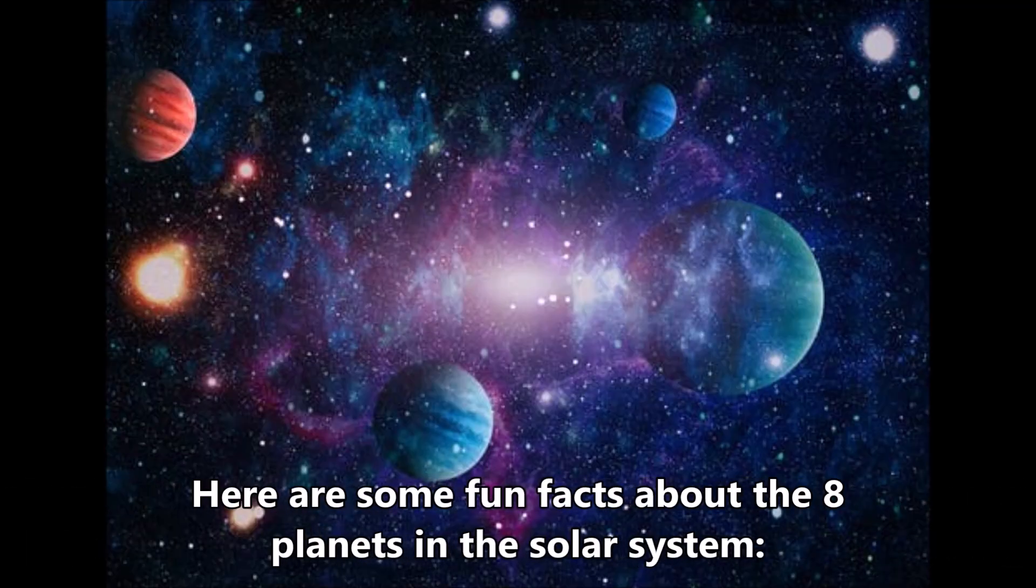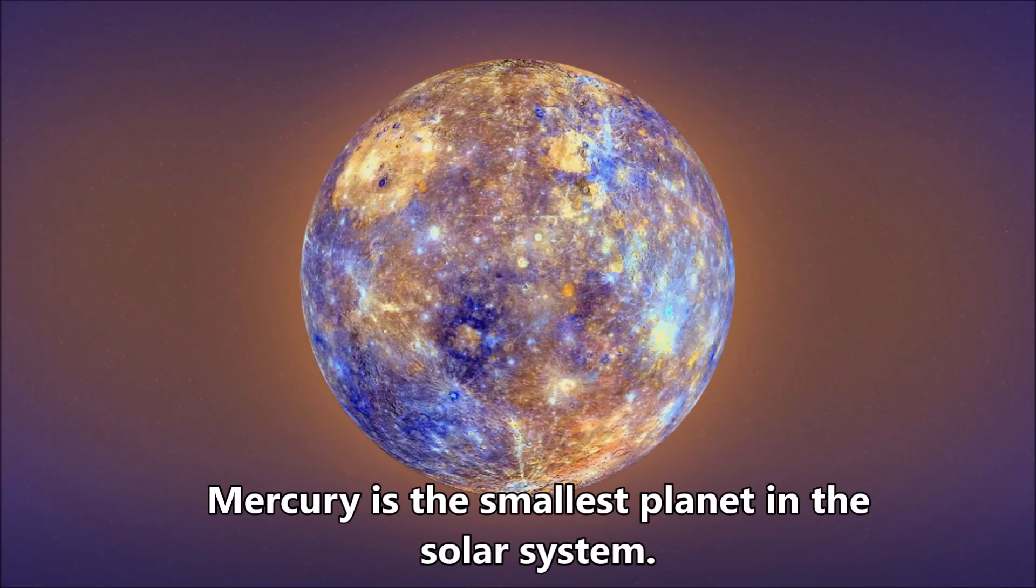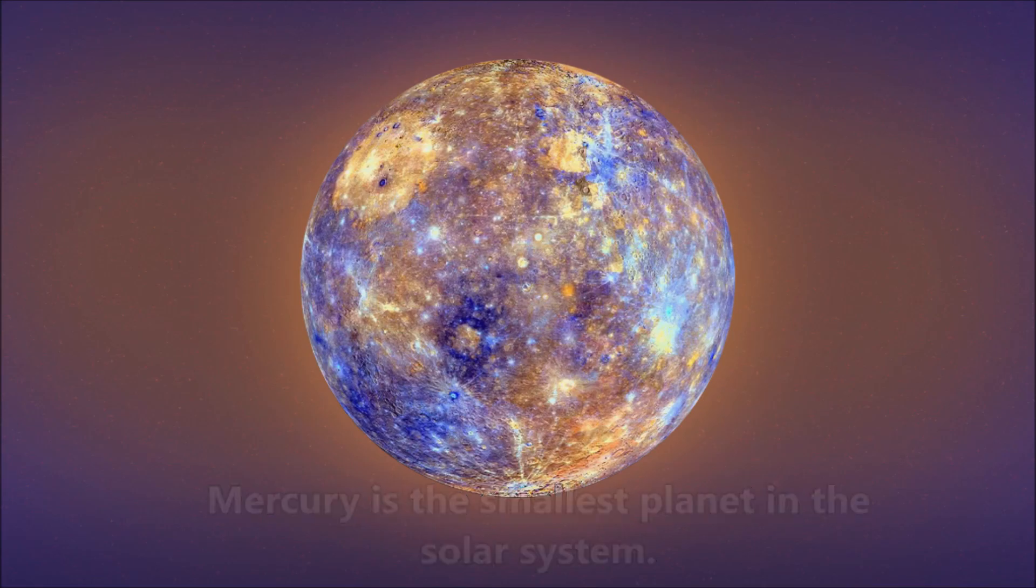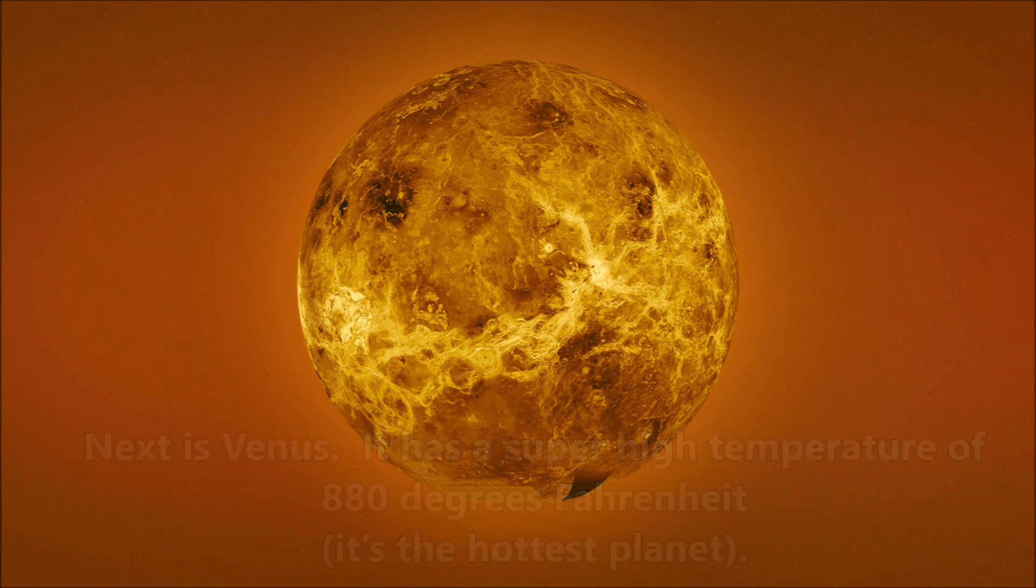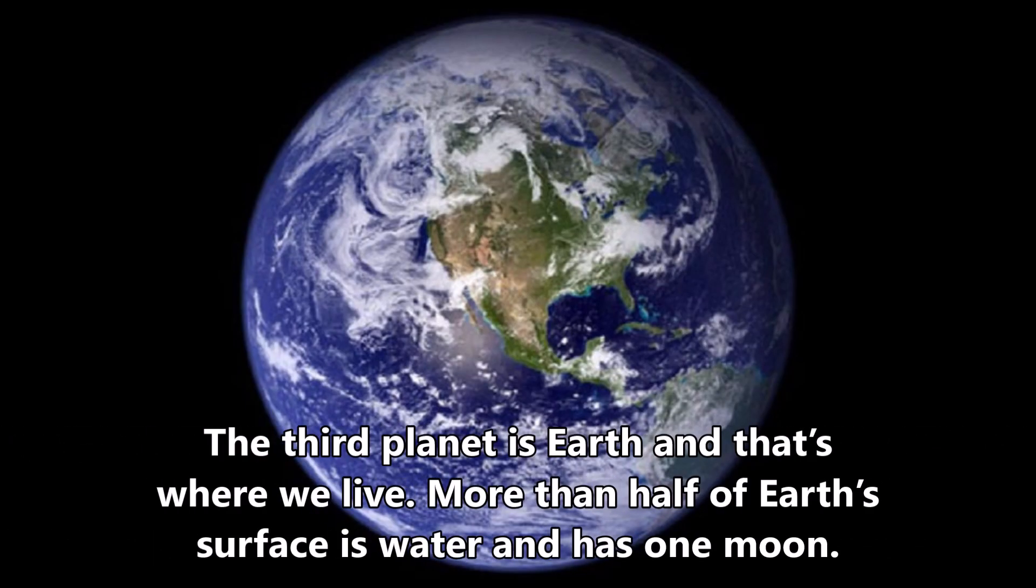Here are some fun facts about the eight planets in the solar system. Mercury is the smallest planet in the solar system. Next is Venus. It has super high temperature of 880 degrees Fahrenheit. It's the hottest planet. The third planet is Earth, and that's where we live. More than half of Earth's surface is water, and has one moon.